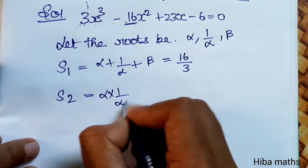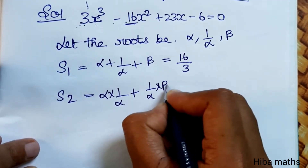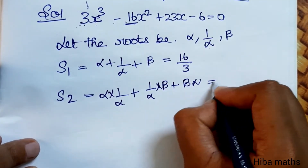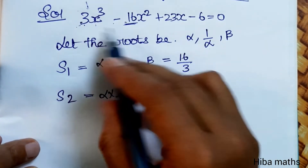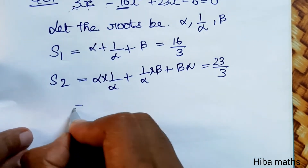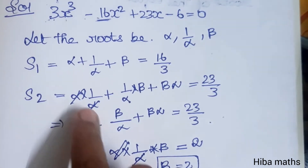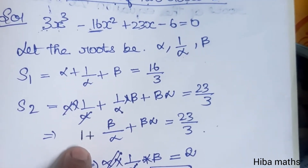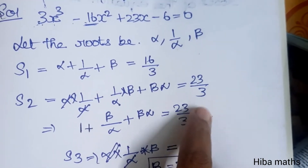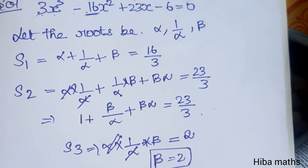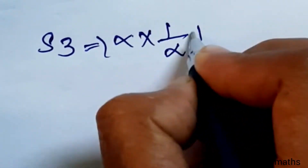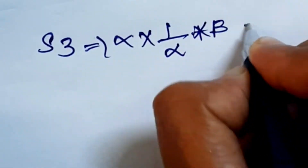For S2: α·(1/α) + (1/α)·β + β·α = 23/3. Simplifying: canceling terms, we get 1 + β/α + βα = 23/3.